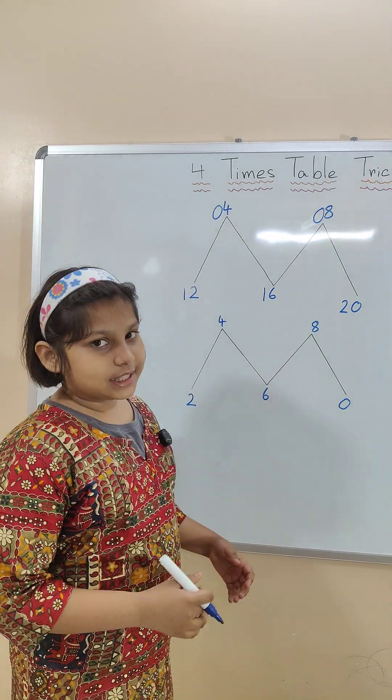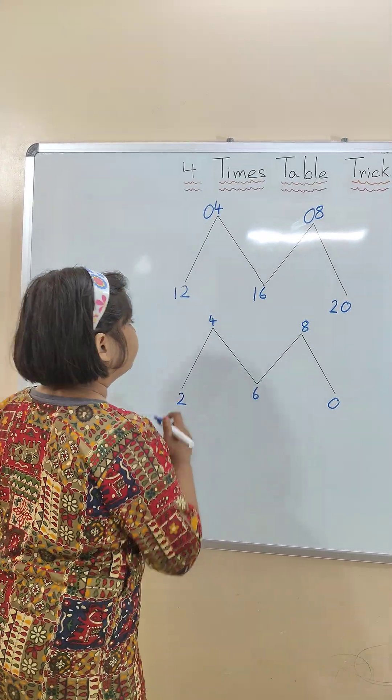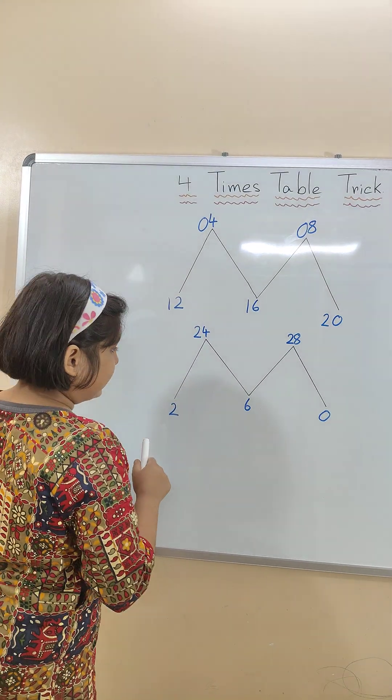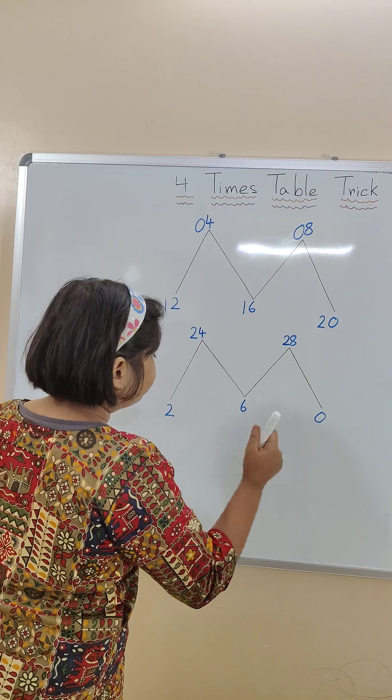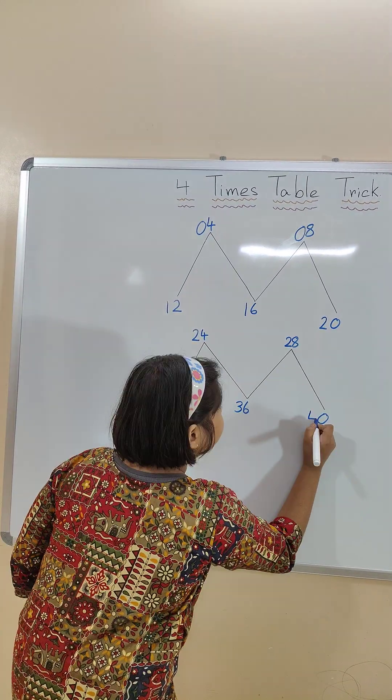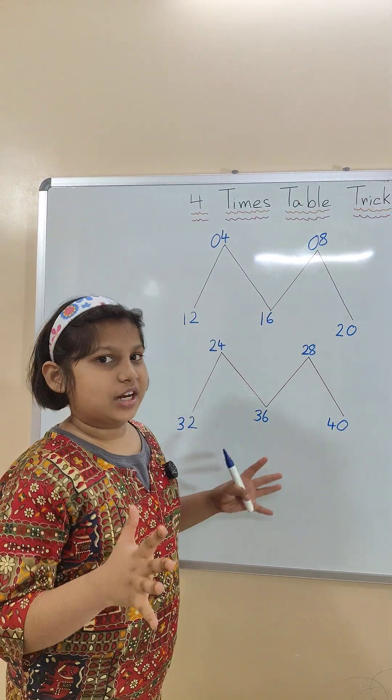In the third row in tens place we will write 2, 2, 2. In the fourth row in tens place we will write 3 except the last one. There we write 4. 3, 3, 4. Our 4 times table is ready.